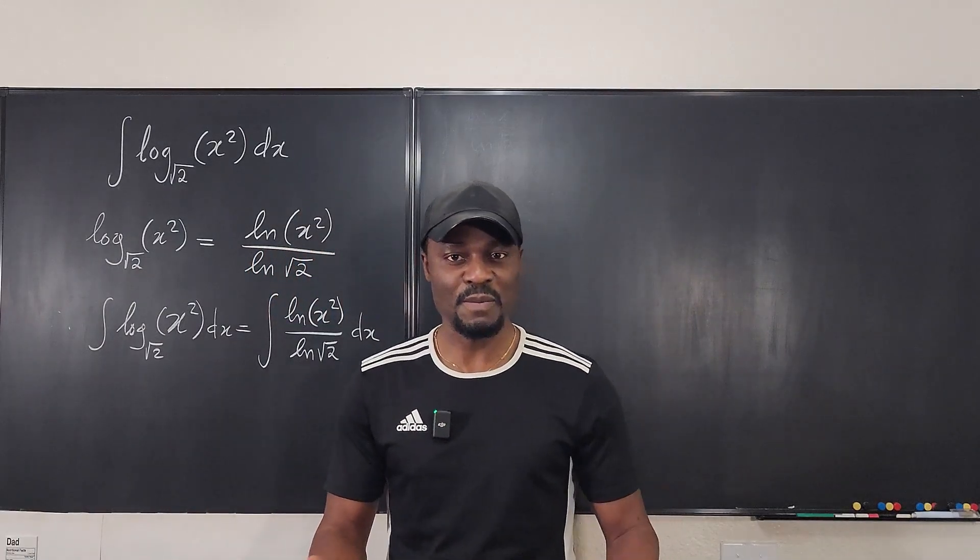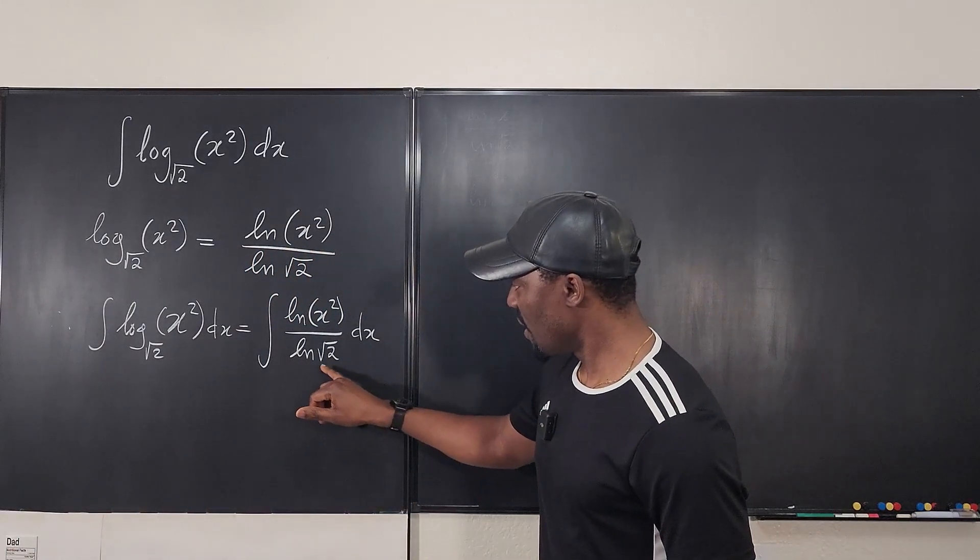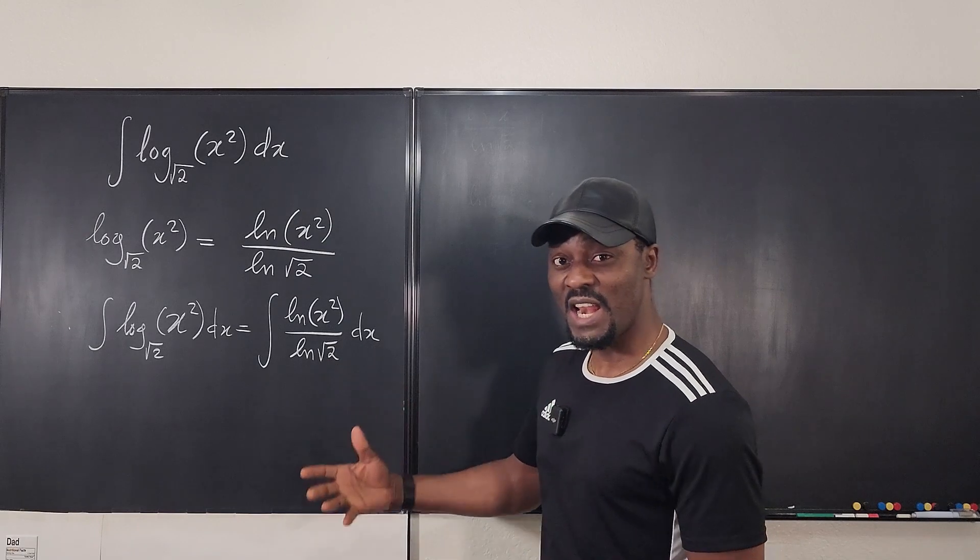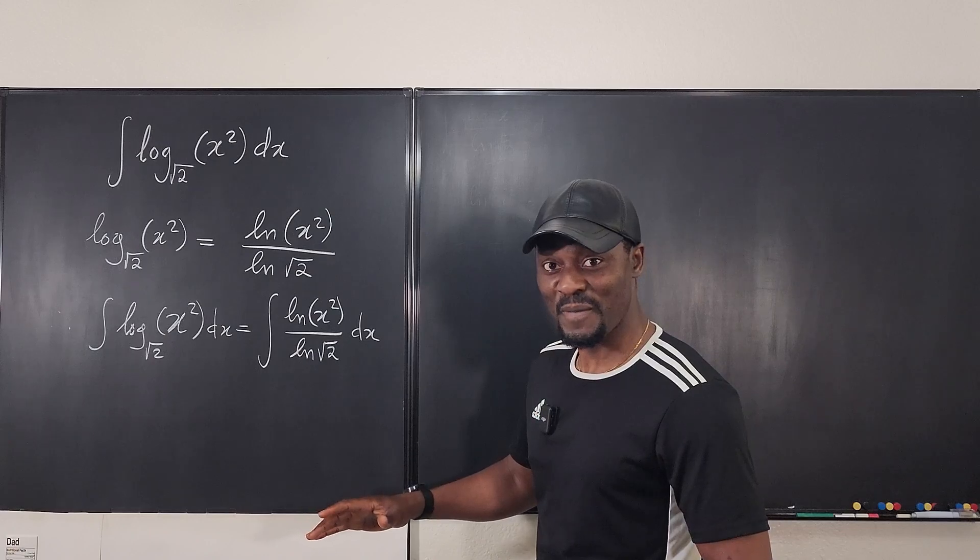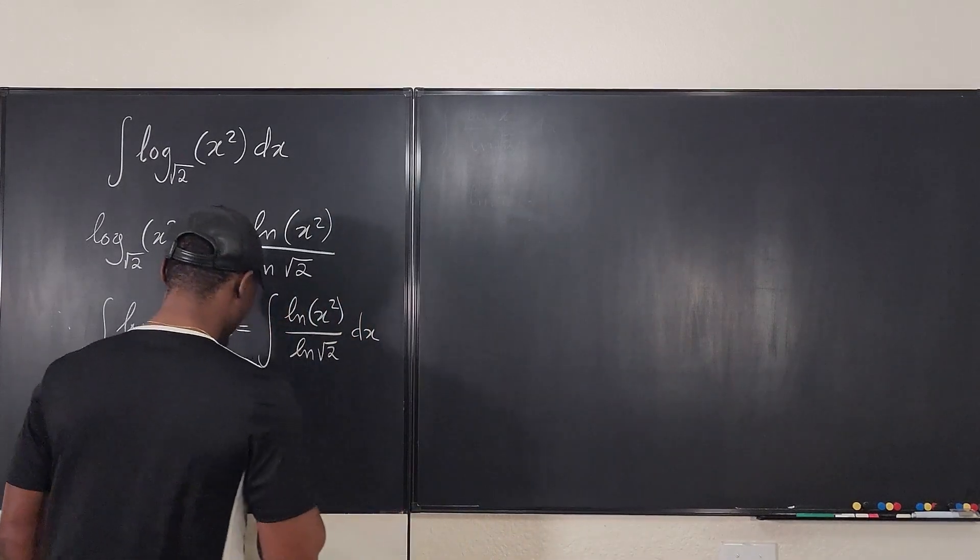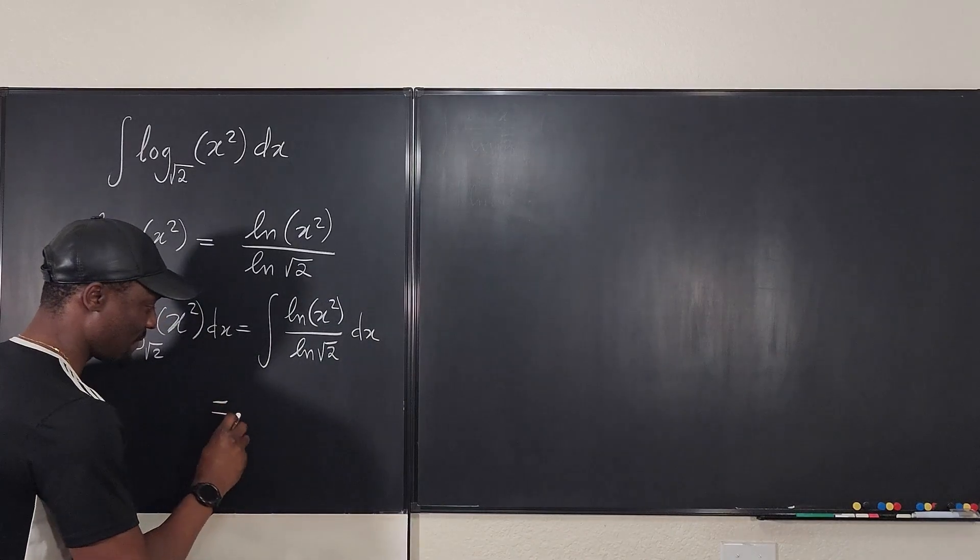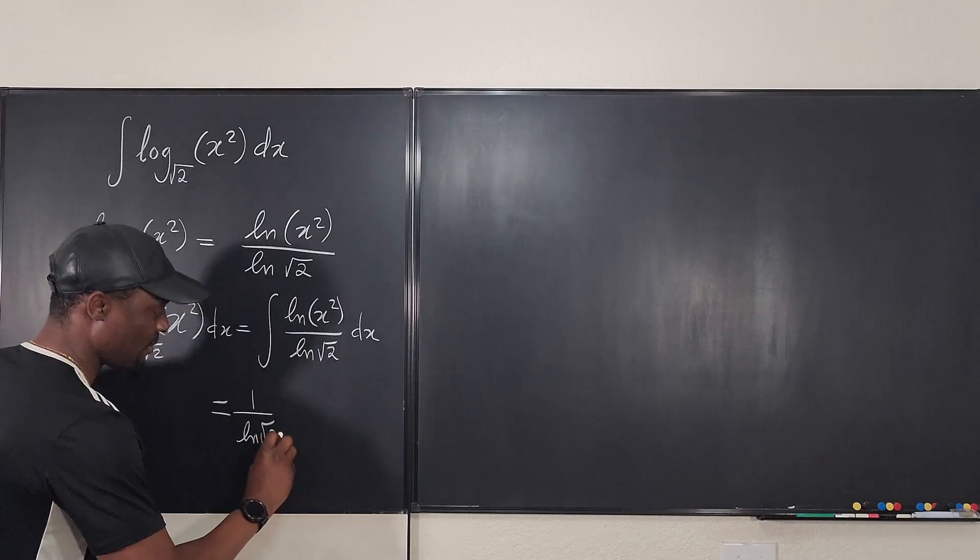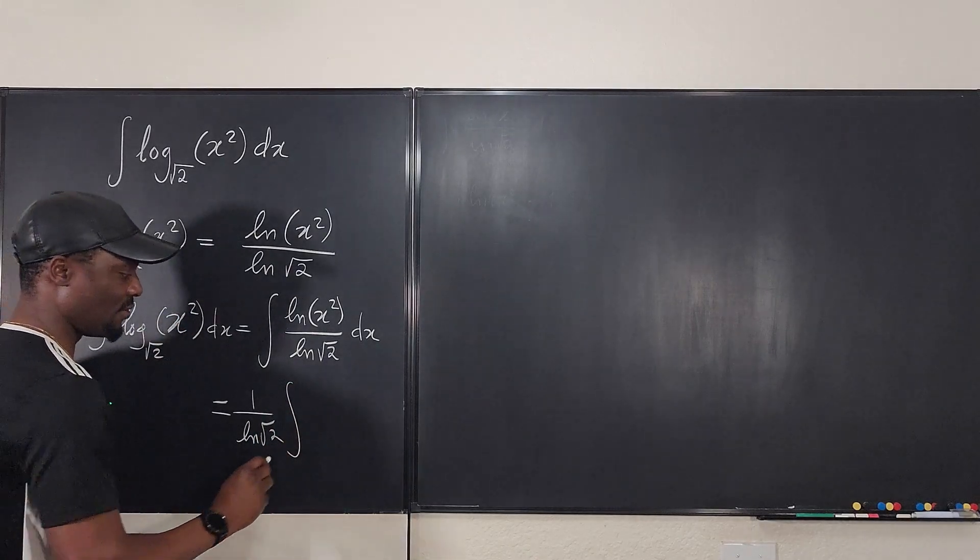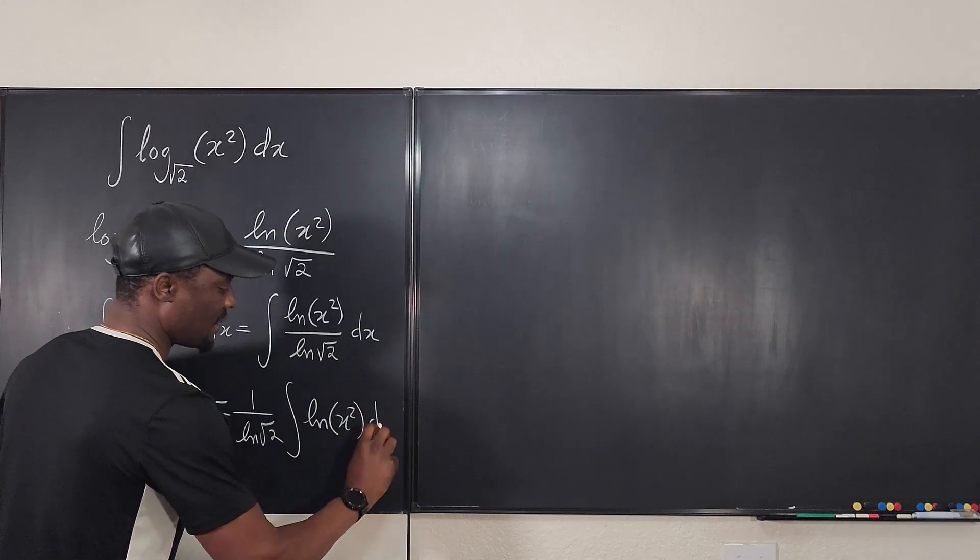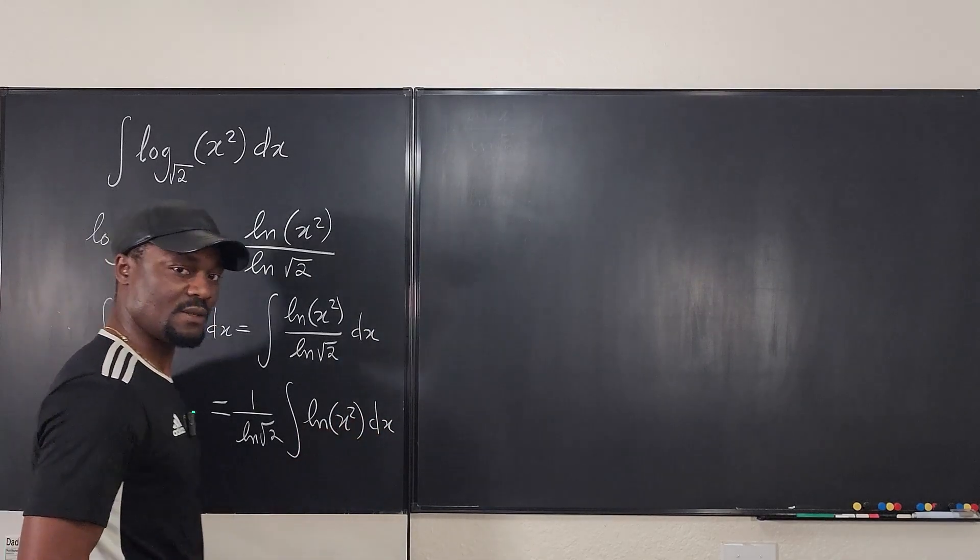Now, how does this make life easier? Well, look, the natural log of the square root of 2 is a number, right? It's just a number. So we can pull this out to the back so that the problem becomes 1 over the natural log of square root of 2 times the integral of ln of x squared dx. And this is all we need to deal with now.